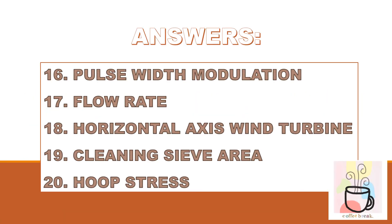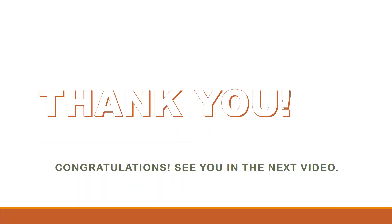Last set of answers. 16. Pulse width modulation. 17. Flow rate. 18. Horizontal axis wind turbine. 19. Cleaning sieve area. 20. Hoop stress. Got it all? Congratulations for passing the familiarization of basic terminologies. Hope it helps. See you again in the next vocabulary. Thank you and God bless.